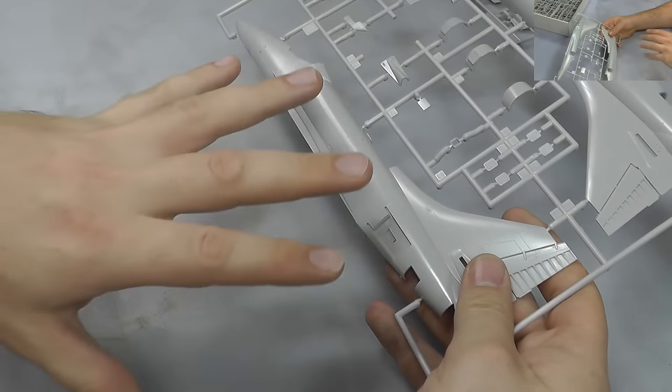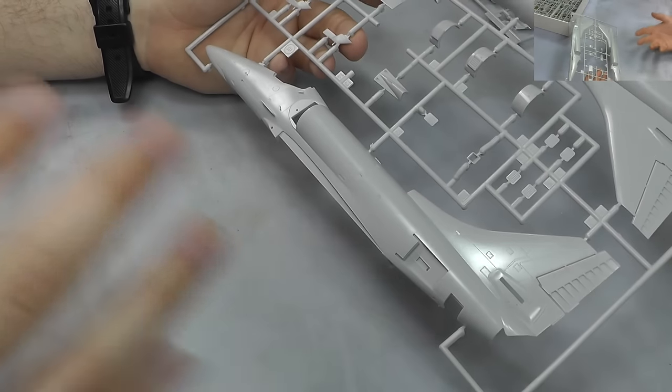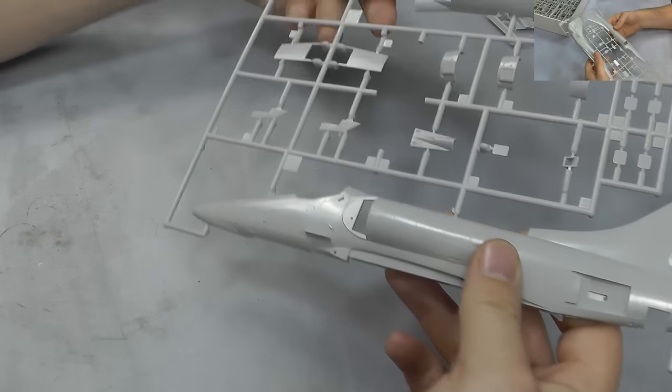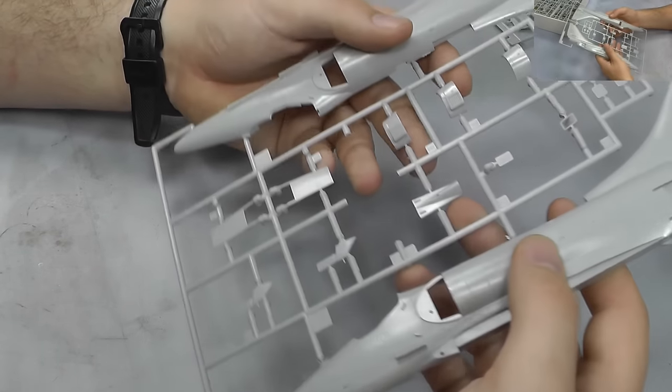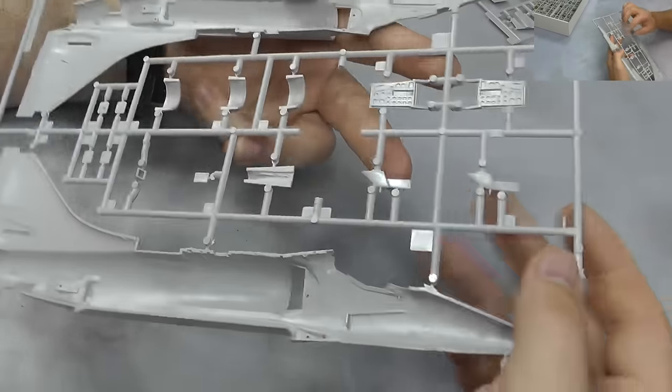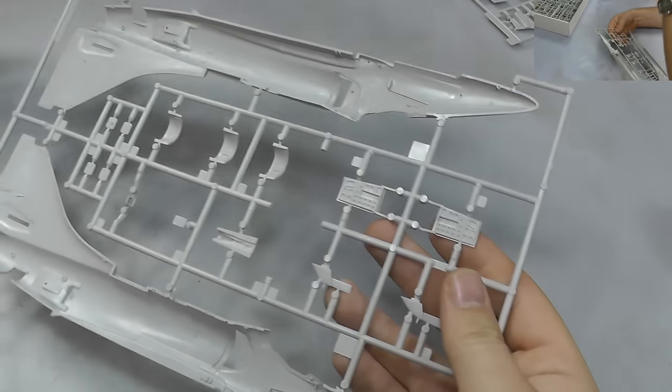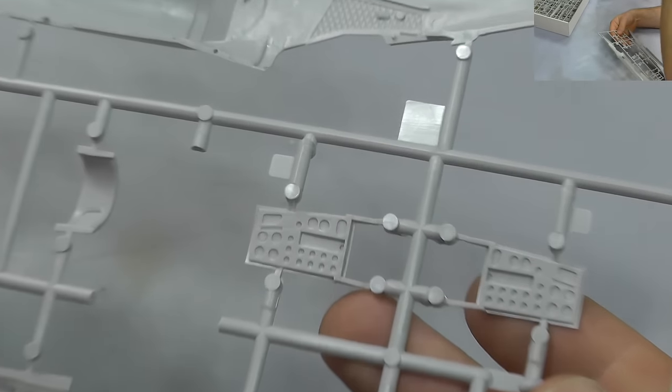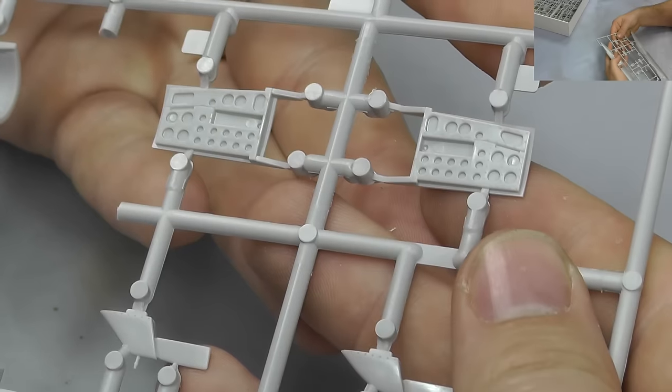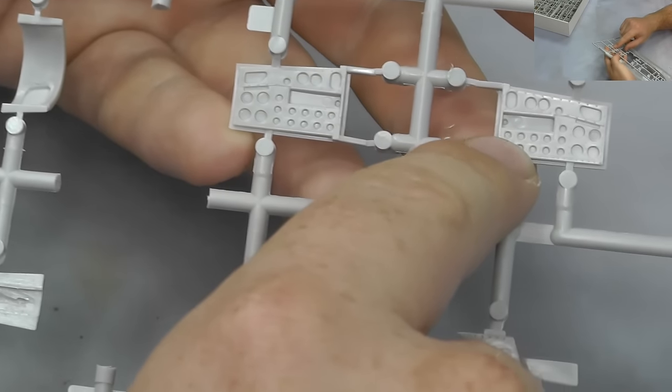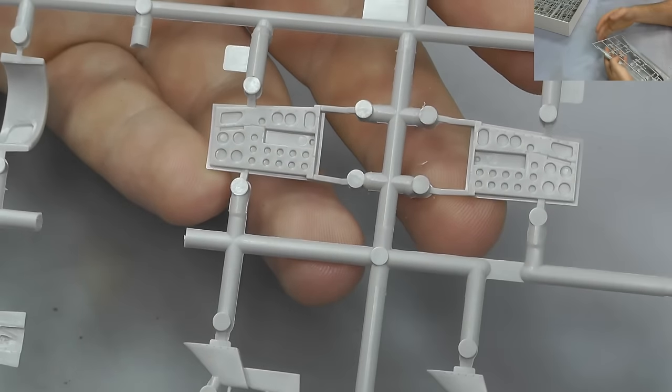It's not what I expected from Hasegawa actually. But then again, this was new tooled in the year 2000. Looking inside here, we've got our air brakes which do look very well detailed. But again, you've got that little bit of ejector pin mark inside here and there, but they do look rather well detailed.